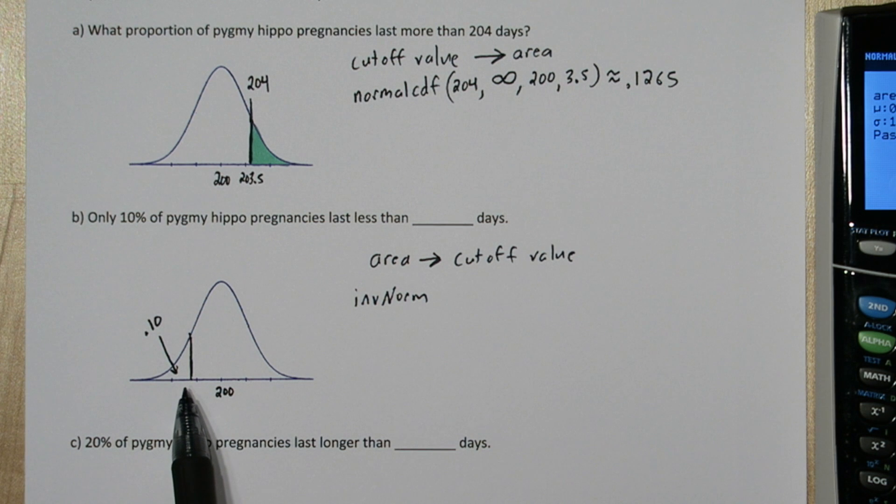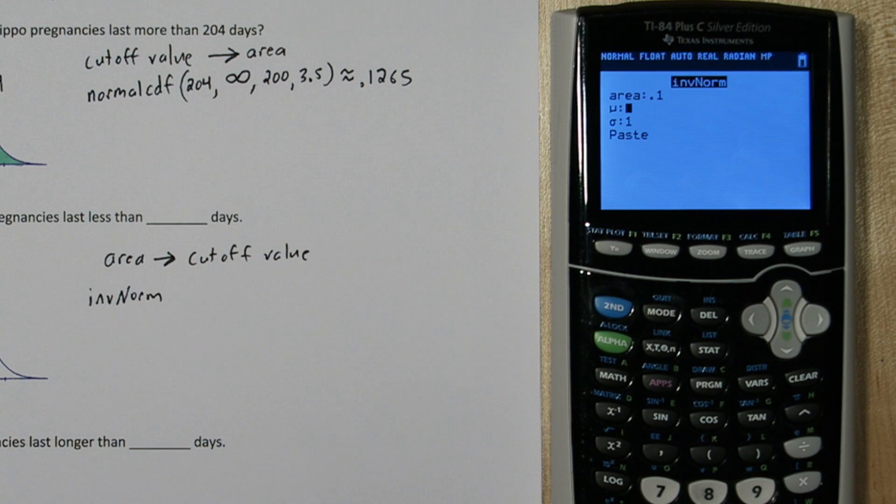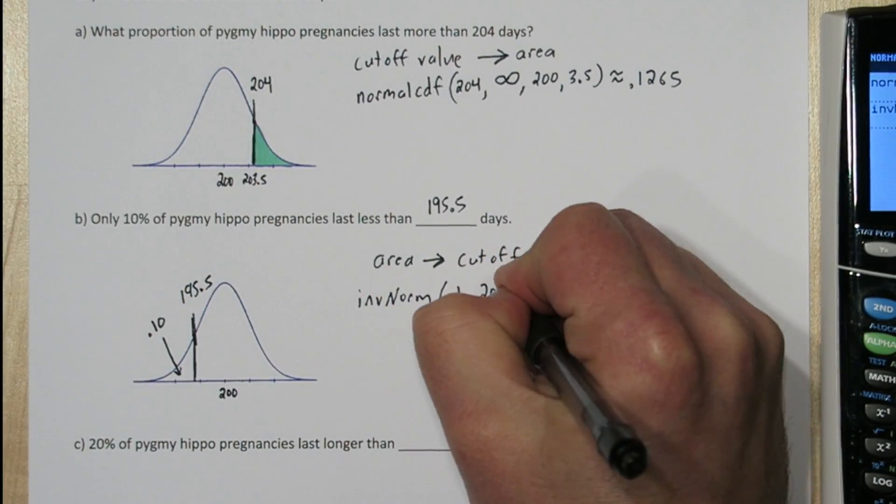The area it's referring to is how much area is to the left of the cutoff value you want. And in our case, 10% is to the left of this unknown cutoff value. Now we'll put the mean, and the standard deviation. And there we go, the cutoff value is about 195.5.